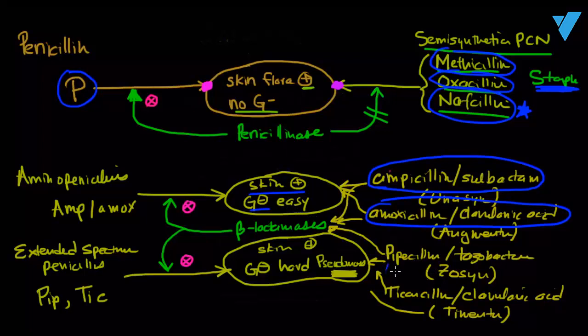The other option is Zosyn or pipercillin tazobactam, which has pseudomonal coverage, along with Timentin, which is ticarcillin clavulonic acid, which also has good pseudomonal coverage. So depending on what your spectrum is that you want to use, you can use these different penicillins.